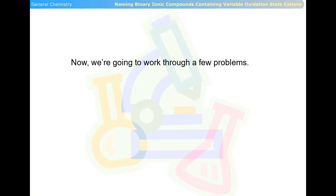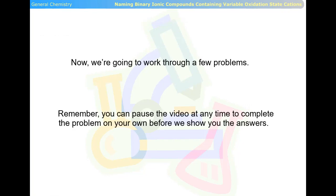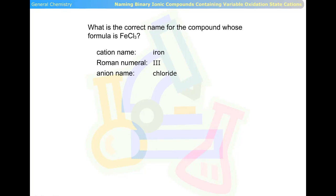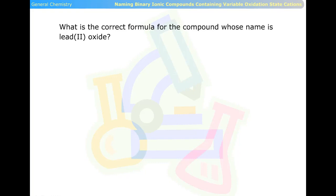Now we're going to work through a few problems. Remember you can pause the video at any time to complete the problem on your own before we show you the answers. What is the correct name for the compound whose formula is FeCl3? The cation name is iron, the Roman numeral is three, and the anion name is chloride, so the compound is called iron(III) chloride. What is the correct formula for the compound whose name is lead(II) oxide? The answer is PbO.